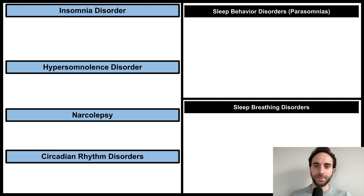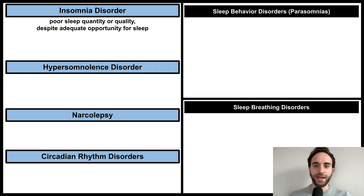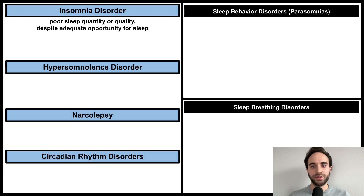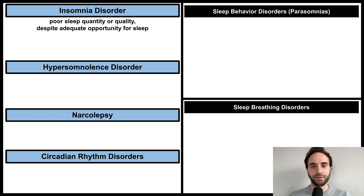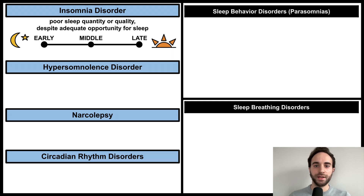Let's start with insomnia disorder. Insomnia disorder involves poor sleep quantity or quality, despite adequate opportunity for sleep. In other words, even though the patient has adequate time and space to sleep, they are unable to get restorative sleep. These sleep problems generally fall into one of three categories, depending on where in the sleep cycle the problems occur.